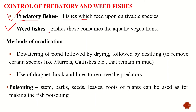There are a number of methods of eradication. By following these methods we can control predatory and weed fishes. The first method is dewatering. Complete dewatering of the pond followed by drying of the soil bottom is suggested as a successful method in eradication of unwanted fishes. We can completely dewater the pond followed by drying of the pond.